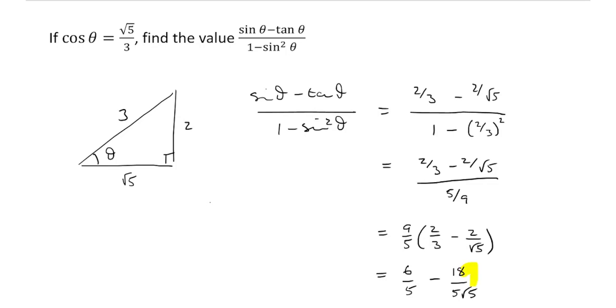And this thing, we should recognize we need to rationalize. We rationalize by timesing top and bottom by root 5. So if we times top and bottom by root 5, what we will get is 18 root 5 on the top and 25 on the bottom.